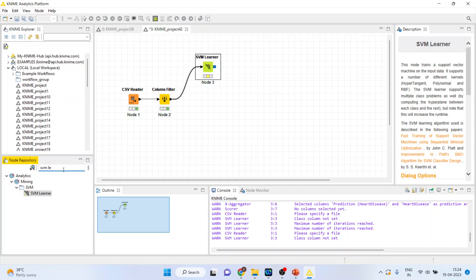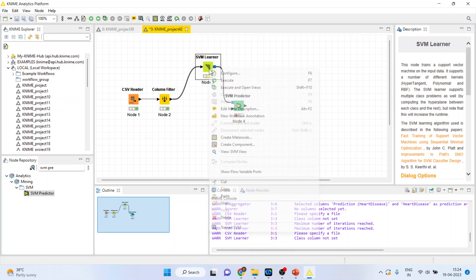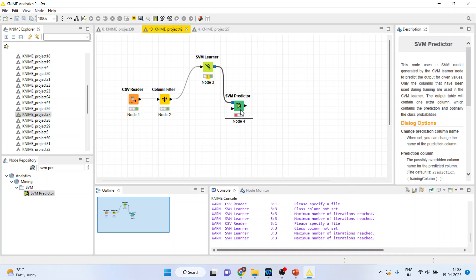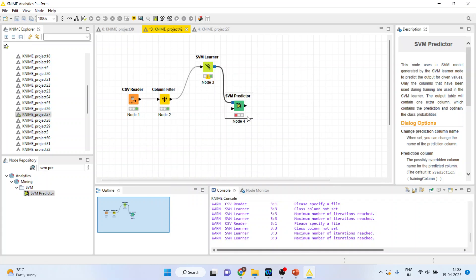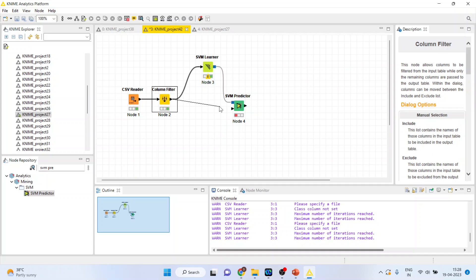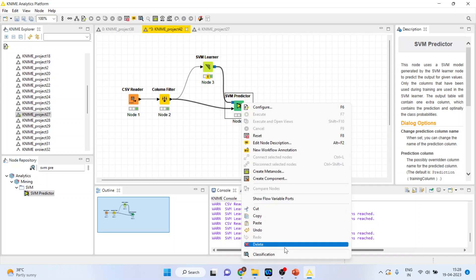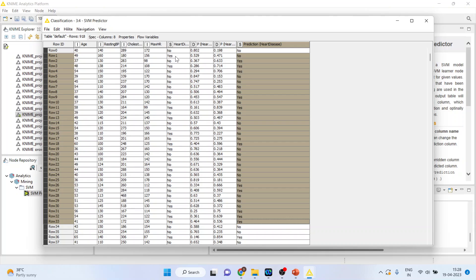Now activate the SVM predictor from here. This predictor will get its learning from SVM learner. Click on the support vector machine predictor, configure. Make sure that you check these boxes. Click OK. Now it will require the dataset, so connect this dataset here. Right click on it and execute. Again, right click on it and you can see the classification. This is the prediction according to the algorithm, and this is the original dataset.